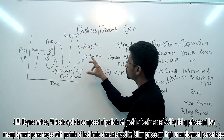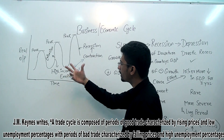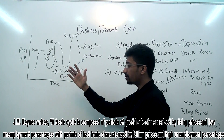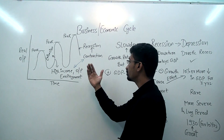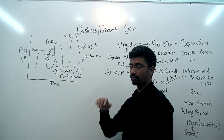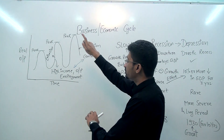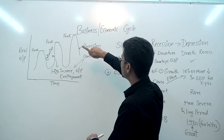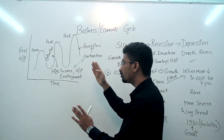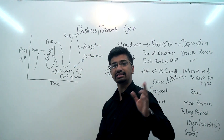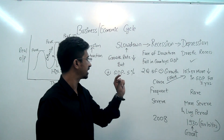Take the opposite of that — during contraction periods, obviously the reverse happens: income will fall, job losses will begin, and output will decline. So now we have understood the full business cycle, and we are ready to understand these three words.